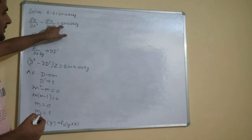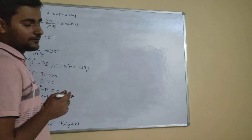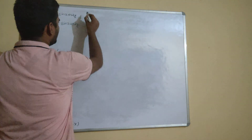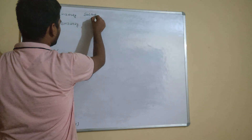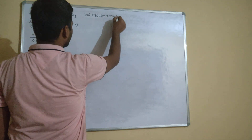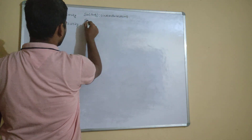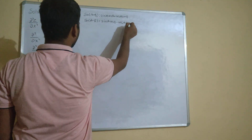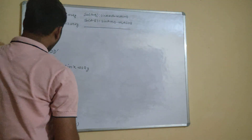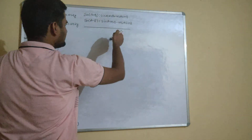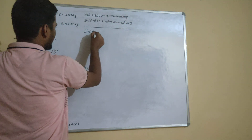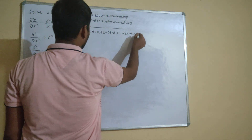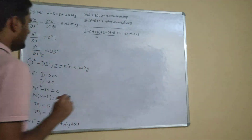Coming to the particular integral, we first simplify sine x cos 2y. Using the identities: sin(a+b) = sin a cos b + cos a sin b, and sin(a-b) = sin a cos b - cos a sin b. Adding these two expressions, we get sin(a+b) + sin(a-b) = 2 sin a cos b, so sin a cos b = [sin(a+b) + sin(a-b)] / 2.